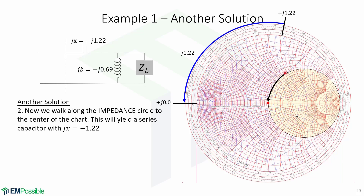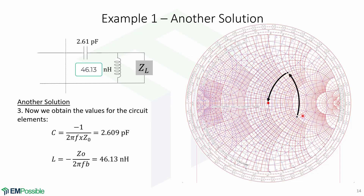From this point, we walk along the impedance circle to the center of the chart. This yields a series capacitor with value of −1.22. Here is a summary of the navigation we did on the Smith chart to get the matching network. The last step is to obtain the values for the circuit elements — in this case the capacitor has this value and the inductor has this value.